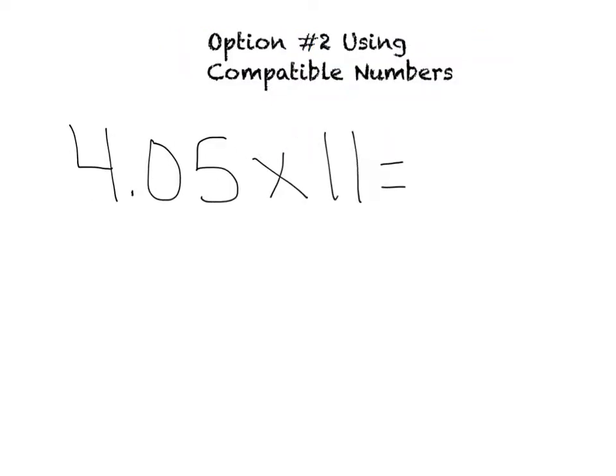The next way we're going to go over is using compatible numbers. This is a way that you guys are most used to doing as a class. Using compatible numbers means rounding until you have two numbers that are easy to multiply together mentally. That's all it means. So I'm going to look at this number I have. I have 4.05 times 11.